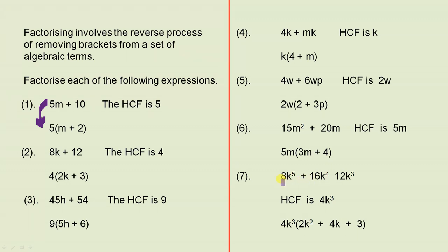And finally, we have those three terms, which have numbers and letters. So you can see that the HCF is going to be a number and a letter. So you have 8, 16, and 12. 4 divides into those three. You've got k to the 5th, k to the 4th, and k cubed. k cubed divides into all of those. So the HCF is 4k cubed. Put 4k cubed on the outside, and you can see straight away that these are the terms that go on the inside of the brackets.